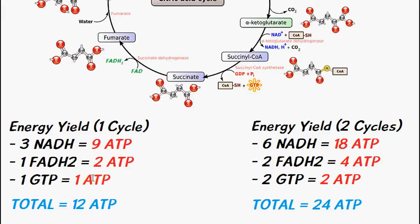So since one NADH will produce approximately 3 ATP this gives us 9 ATP altogether from one spin of the cycle. For one FADH2 we get 2 ATP and one GTP we get 1 ATP. So this gives us a total of 12 ATP.